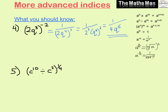For number 5, we work out what's in the bracket first. We have a division, so we subtract the powers: c to the power of 10 minus 2 is c to the power of 8, still inside the bracket with the quarter outside. When we have indices with brackets we multiply the powers, so we do c to the power of 8 times one quarter, giving 8 over 4, which is 2. The final answer is c squared.